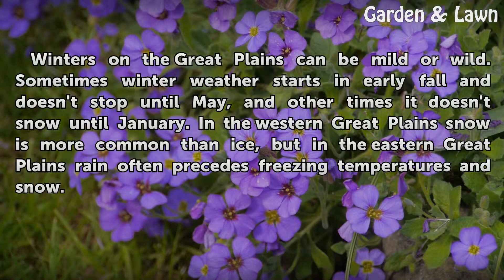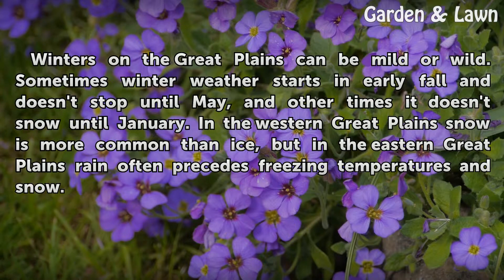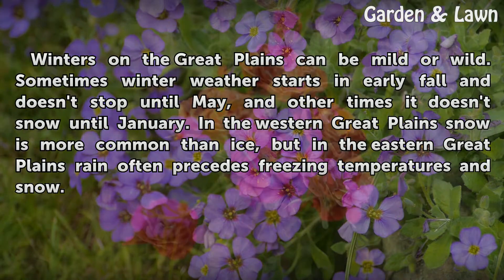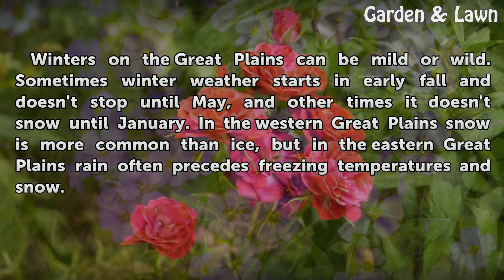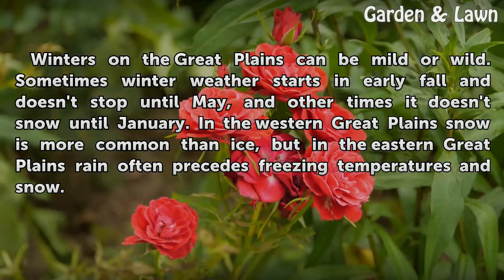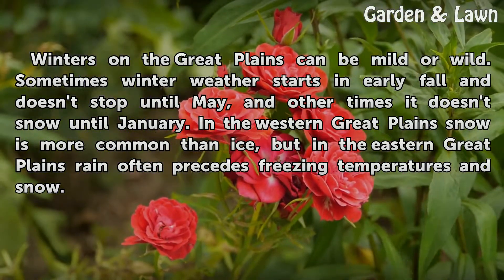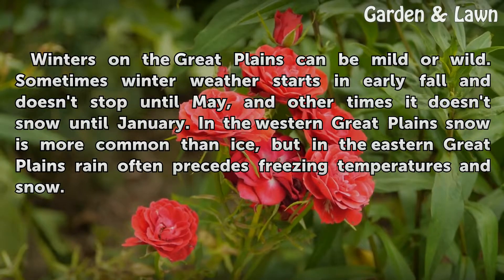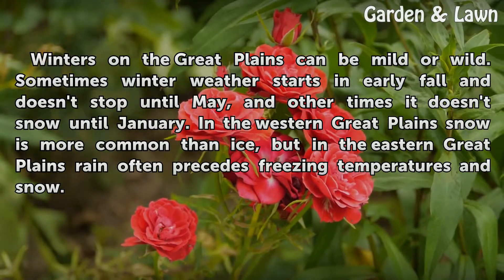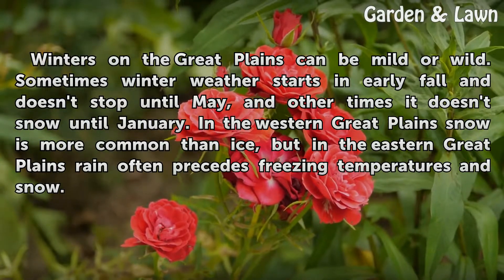Winters on the Great Plains can be mild or wild. Sometimes winter weather starts in early fall and doesn't stop until May, and other times it doesn't snow until January. In the Western Great Plains snow is more common than ice, but in the Eastern Great Plains rain often precedes freezing temperatures and snow.